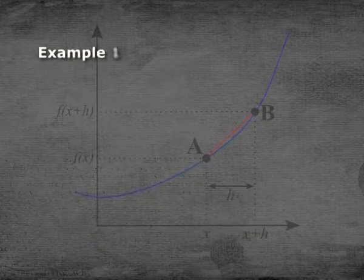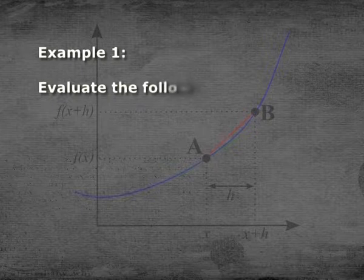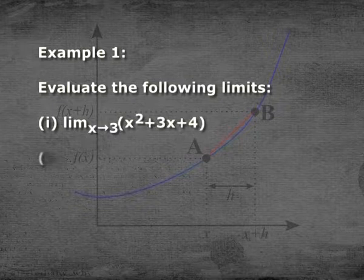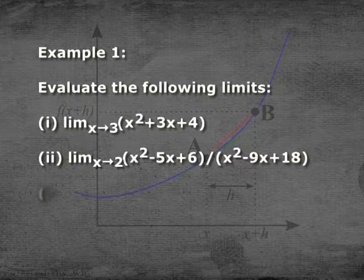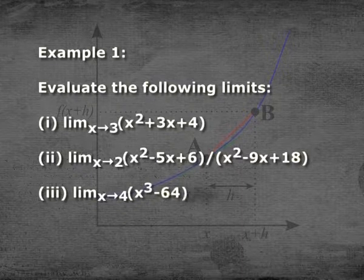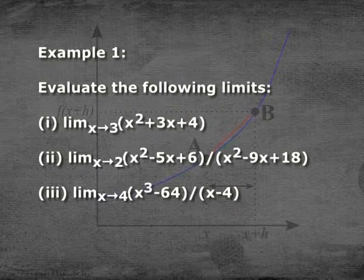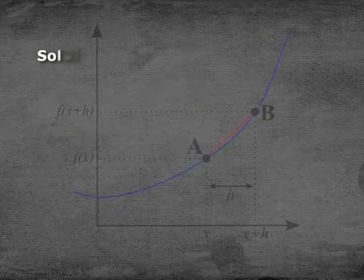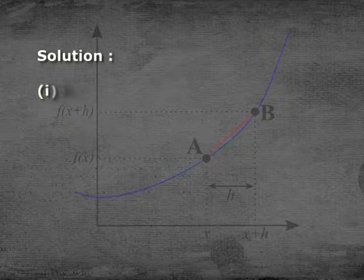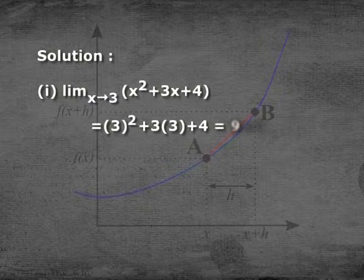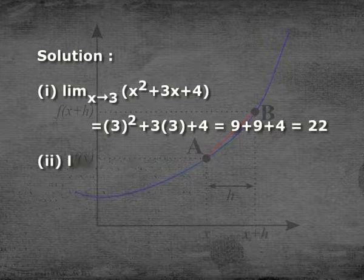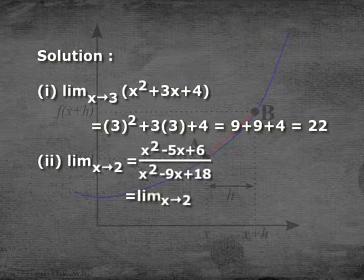Now let us see Example 1. Evaluate the following limits. First: limit x→3 of (x² + 3x + 4). Second: limit x→2 of (x² − 5x + 6)/(x² − 9x + 18). Third: limit x→4 of (x³ − 64)/(x − 4). Solution — First: limit x→3 of (x² + 3x + 4) = 3² + 3×3 + 4 = 9 + 9 + 4 = 22.